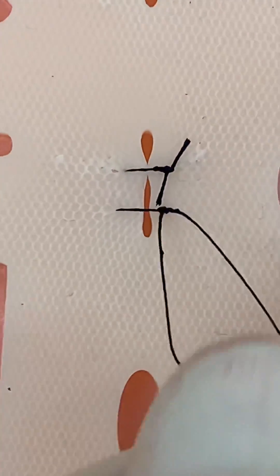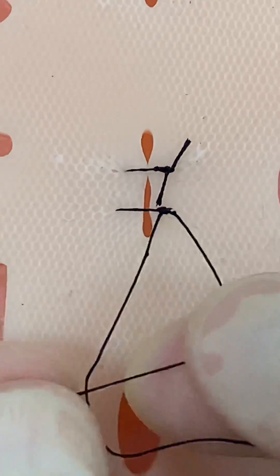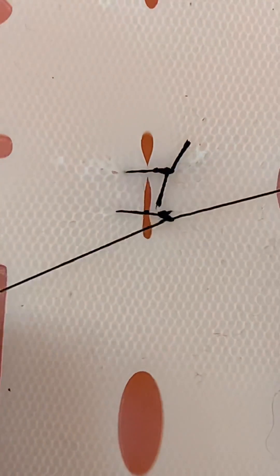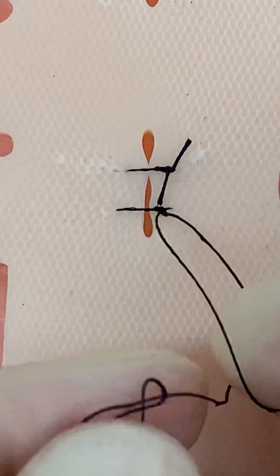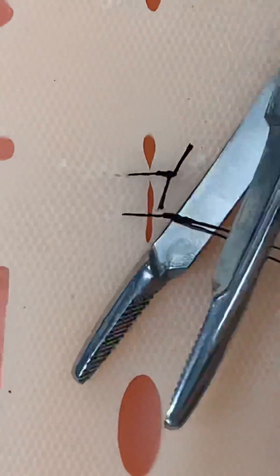It's also much slower tying knots without instruments, so the triple throw had time to loosen before I could secure it with the square knots. And the wound edges didn't come together as nicely. So instrument tying is definitely the way to go.